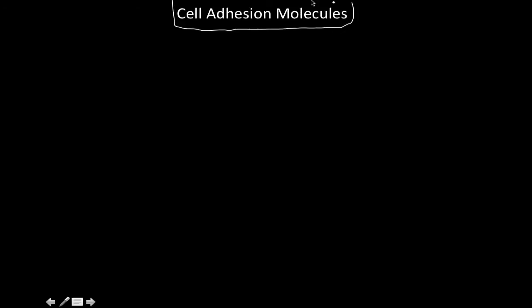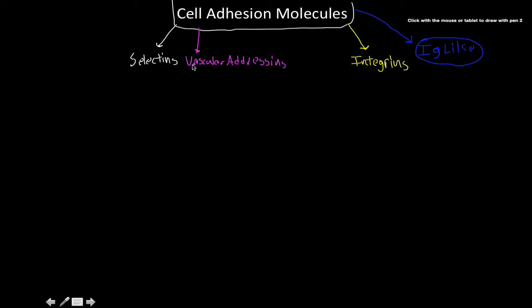For cell adhesion molecules, let's just do a brief review. I'm going to list them in their pairs of each molecule. So there's the selectins, and then right next to the selectins are the vascular addressins. That's the first pair. The second pair that we have is the integrins, and these guys are going to be paired with the IG-like molecules, and then I'll break down further what I mean by there.